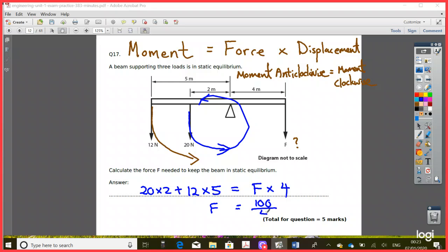So that's 100 divided by 4. So the force that needs to keep this in static equilibrium will be 25 newton. So this needs to be 25 newton, and that's it.